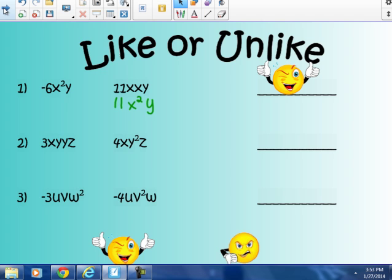Number 2, like number 1, this has a yy, y times y, which also means I could have written this 3xy²z, 4xy²z. So I compare again. Numerical coefficients don't matter. To be like terms, they have to have the same variable to the same power. x in the first one, x in the second one. y² in the first one, y times y is y². y² in the second term. z in the first term, z in the second term. If you said number 2, these are like terms, you are correct.